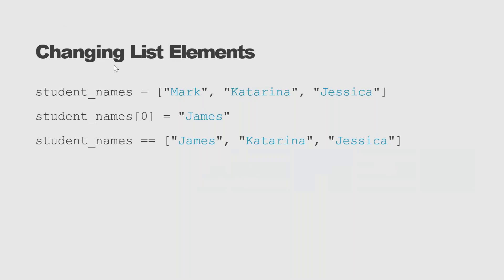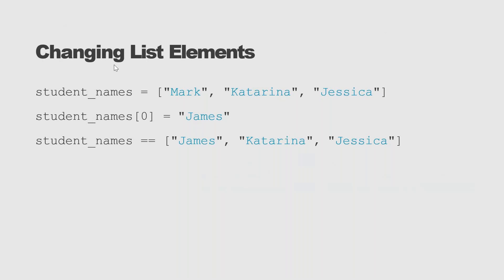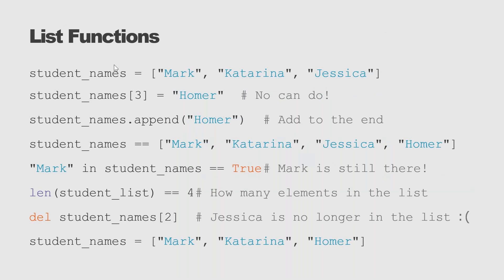You can change a list element — for example, changing Mark to James — because the list is mutable. Tuples are not mutable. Certain list functions: 'append' is used when you want to add a new element. To check whether an element is in the list, use 'in'. To check the length of the list, use 'len'. To delete an element, use 'del'.